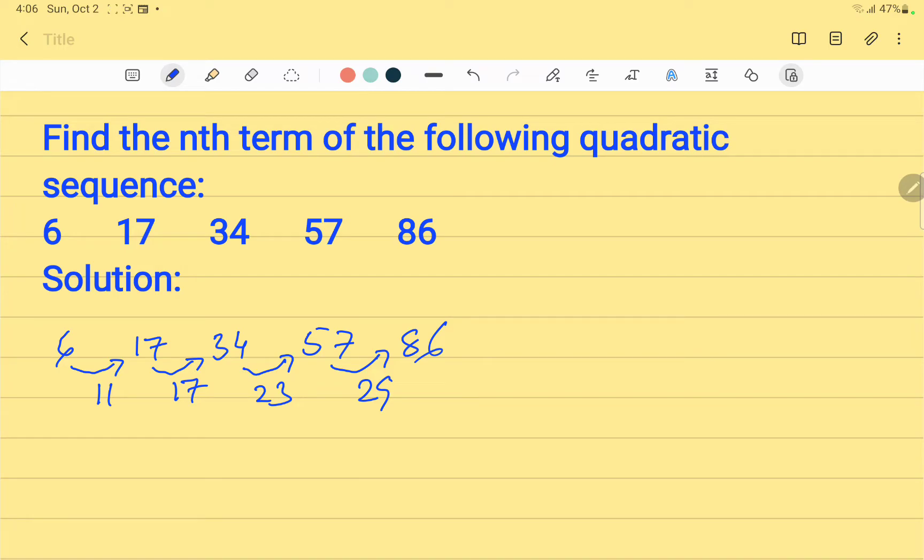As we can see, these differences are not the same, so we will take one step further and find the differences again. When we subtract 11 from 17, the answer is 6. 23 minus 17 is again 6, and 29 minus 23 is again 6.